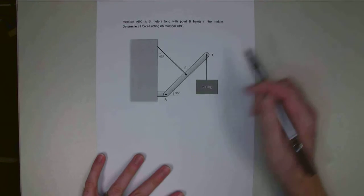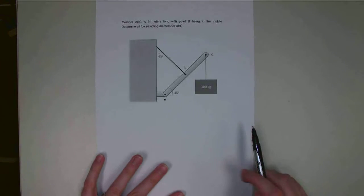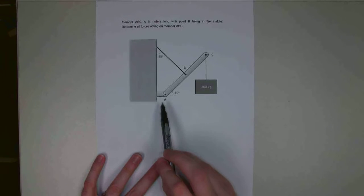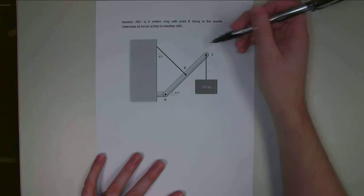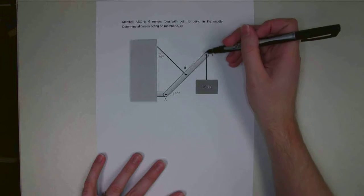Hello. For this problem, we've got member ABC, which is being supported by a pin joint down at A, by a cable at B, and it's supporting a weight of 300 kilograms from C.